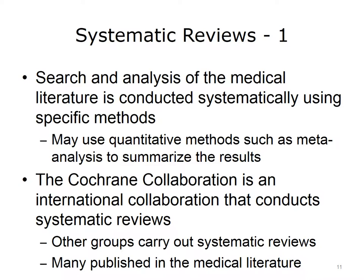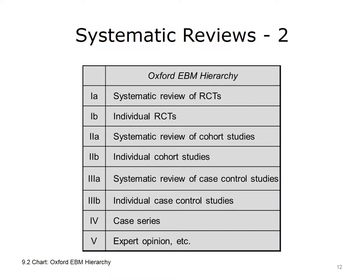There are other research groups that carry out systematic reviews, and many are published in medical journals. Recalling the hierarchy ladder: stronger studies such as randomized controlled trials float toward the top, while weaker studies based on expert opinion fall toward the bottom. Systematic reviews of a particular study design are considered stronger than individual studies. For example, a systematic review of randomized controlled studies would be the highest rung on the ladder. A systematic review of cohort studies would be higher than an individual cohort study, and a systematic review of case control studies would be higher than an individual case control study. Case series and expert opinions are usually not combined in a systematic review.